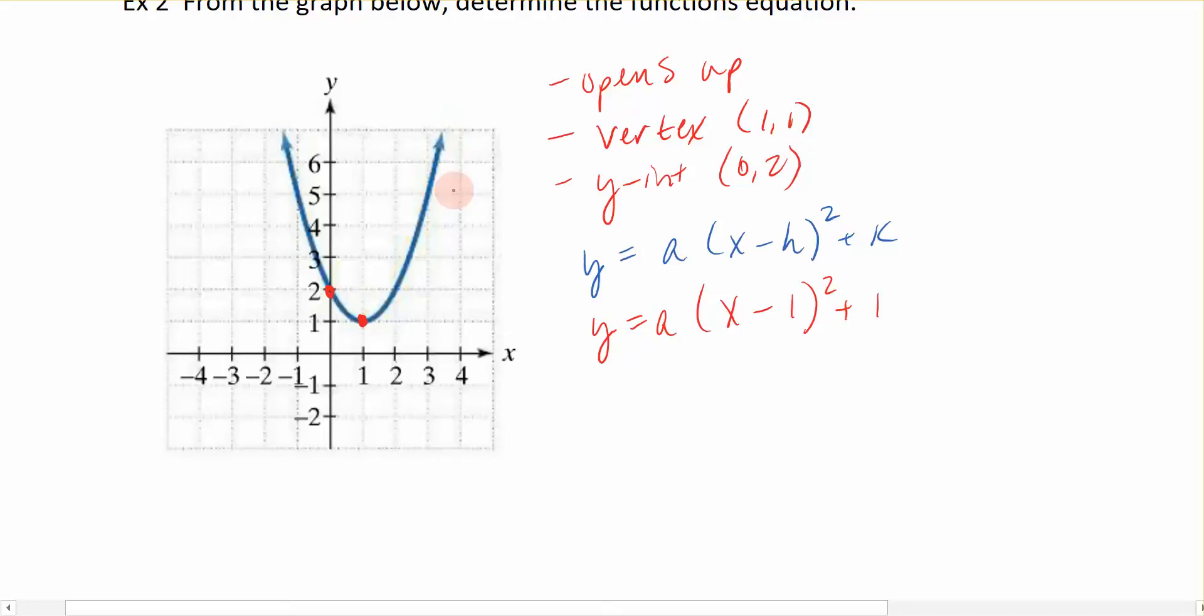The way that we do that is we are going to use that other known point from my graph, which has an ordered pair, right? This point right here has an ordered pair with x and y coordinates. So what I'm essentially going to do is use these x and y coordinates to replace the x and y in the equation I'm generating.